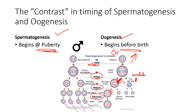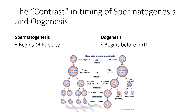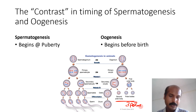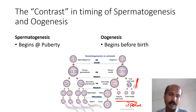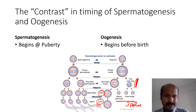The secondary oocyte proceeds to completion only if fertilization occurs, resulting in a fertilized egg and the second polar body. If there is no fertilization, you only have a secondary oocyte with the first polar body. Interestingly, the first polar body can itself divide, so after fertilization you can end up with two or three polar bodies total. Without fertilization, there is always only one polar body.